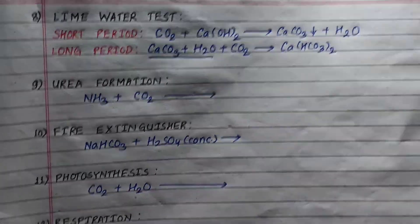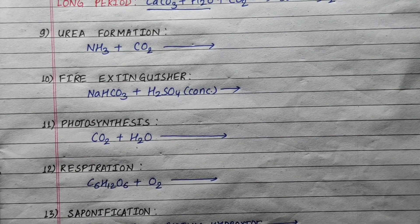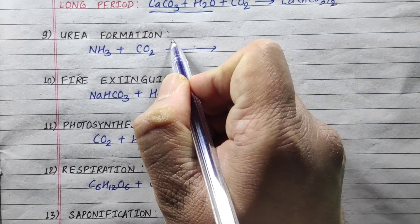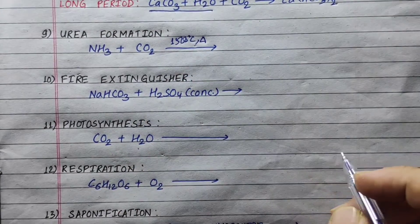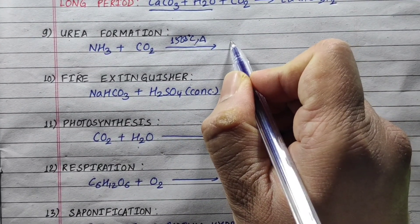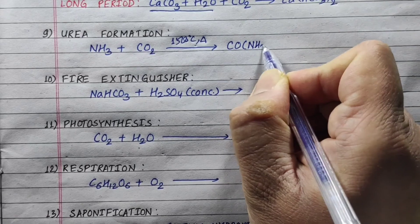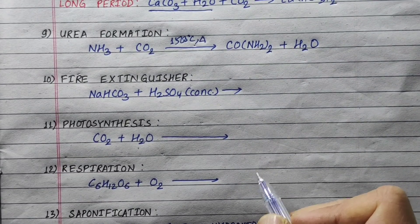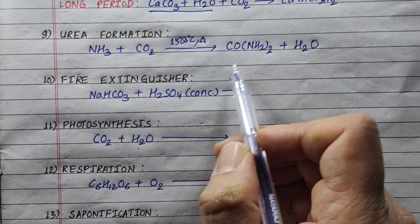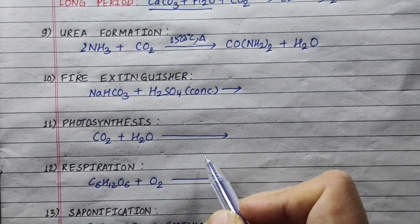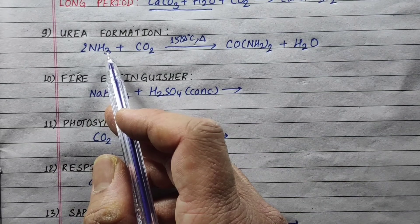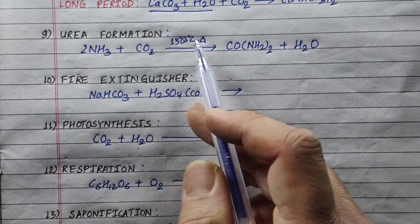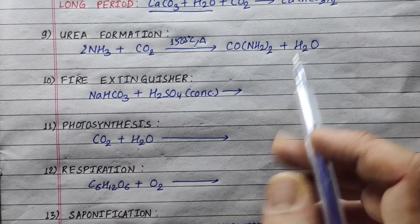Now let's go to urea formation. We use ammonia gas and CO₂, heated to 150 degrees Celsius. The product is urea: CO(NH₂)₂ and water. Balancing: we need 2 nitrogen, hydrogen 6 (4 + 2 = 6), oxygen is 2 — balanced. So 2NH₃ + CO₂ → CO(NH₂)₂ + H₂O.